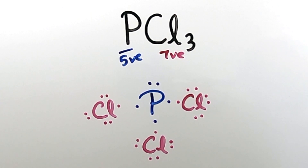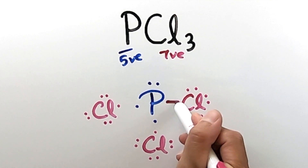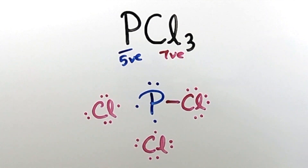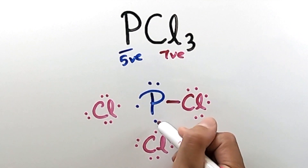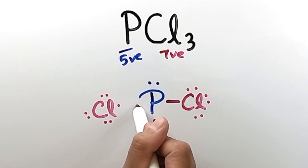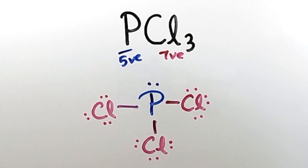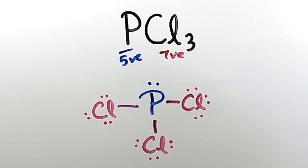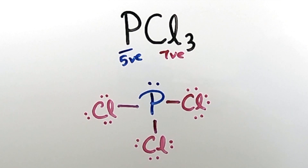This is the Lewis dot structure of phosphorus trichloride. If I were to draw a bond from this electron to that electron, this electron to that electron, and this electron to that electron — there is your phosphorus trichloride structure. Simple as that.